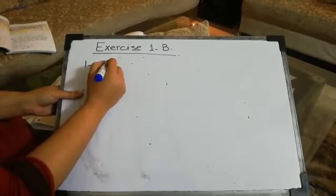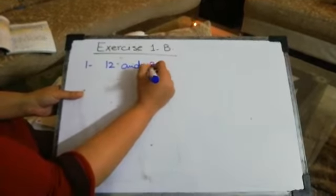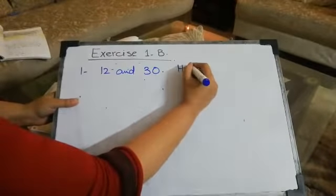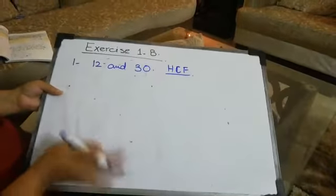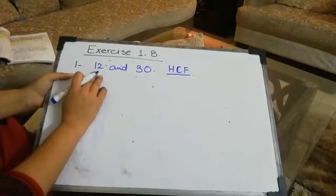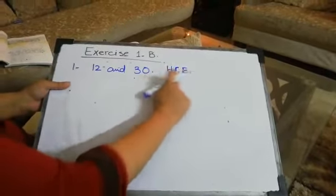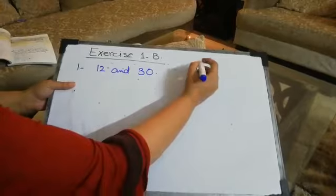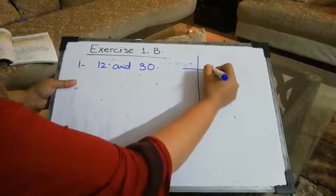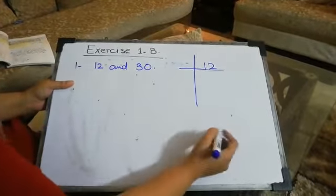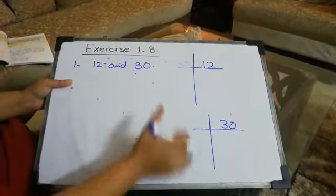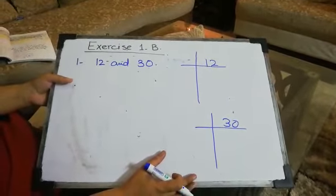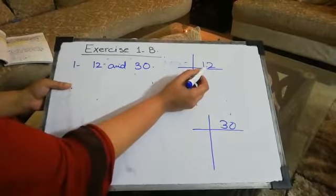We are going to start with the first question, which is 12 and 30. We need to find the highest common factor, that is HCF. For finding the HCF of 12 and 30, first we need to find out the factors for 12 and the factors for 30. This work you need to do in your rough work on the right hand side of your notebooks.